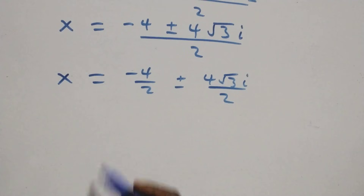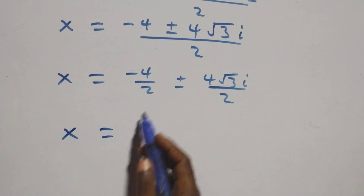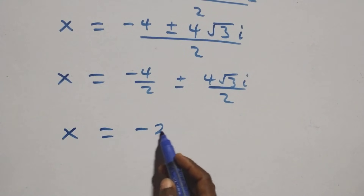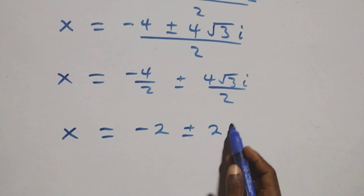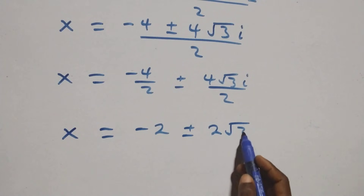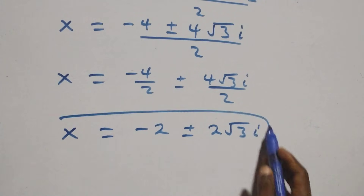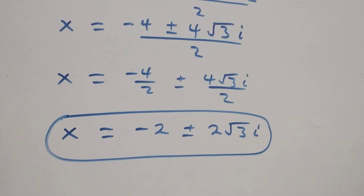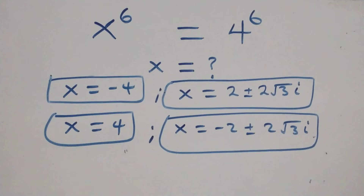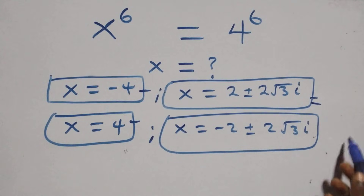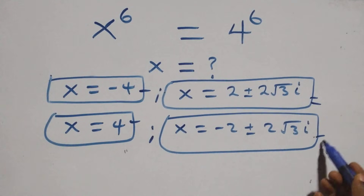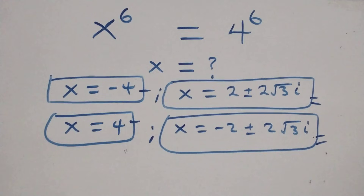At this point, we have two more complex solutions. Therefore, all together in this problem, we have 6 solutions: 2 real solutions (x = -4 and x = 4), 2 complex solutions from the first case, and 2 complex solutions from the second case.